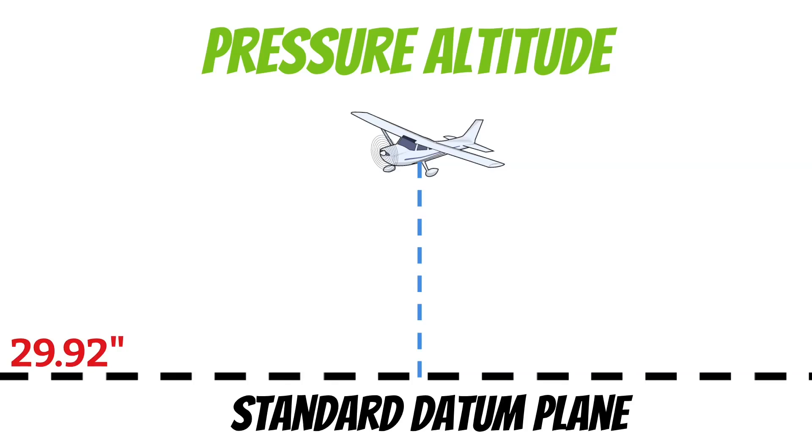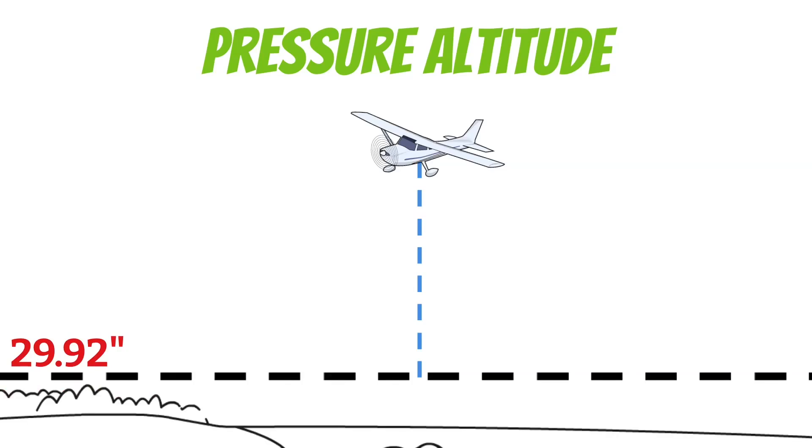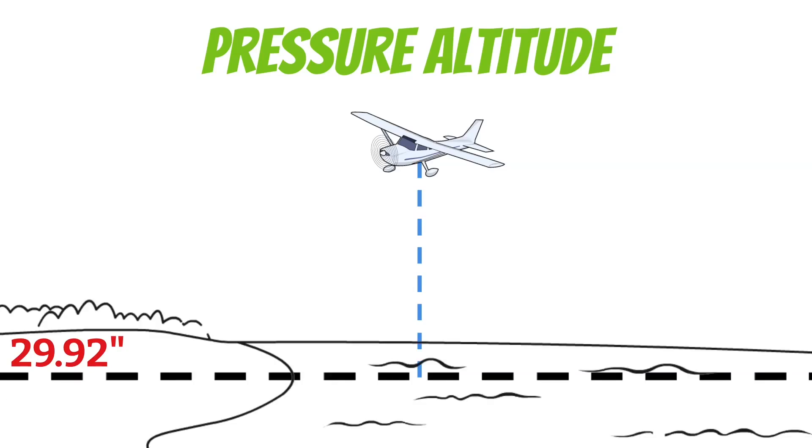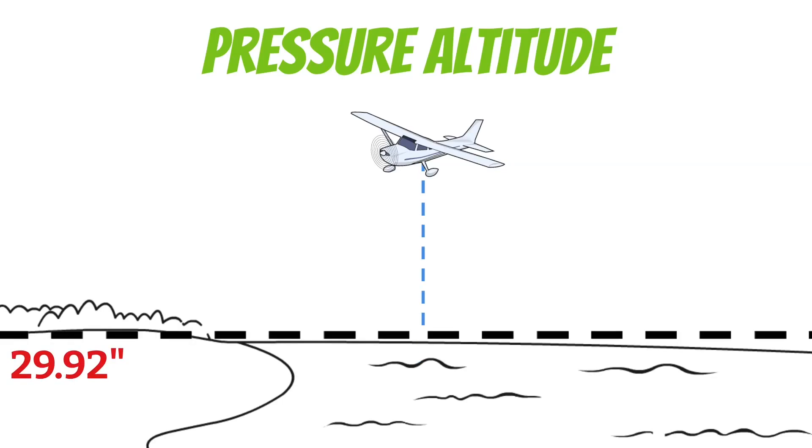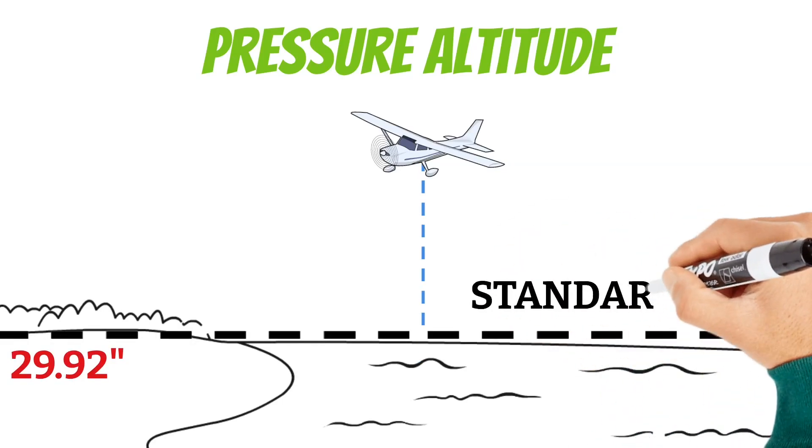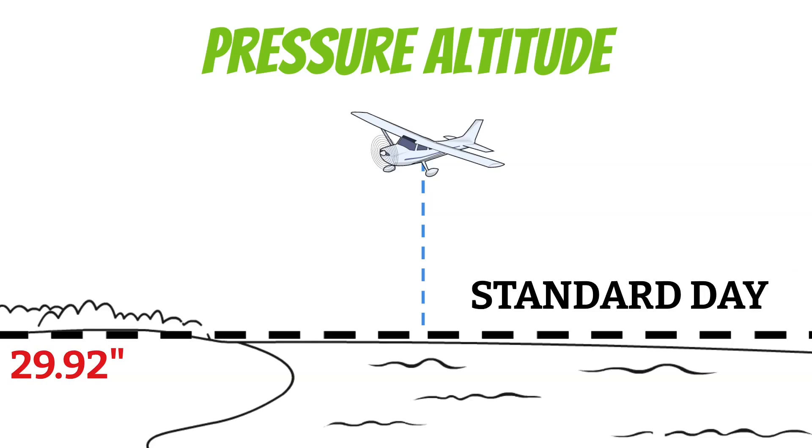But remember, 29.92 inches is only the average, so this line can be above sea level, sometimes it can also be below sea level, but it's rarely right at sea level. And when it is, we call this the standard day.